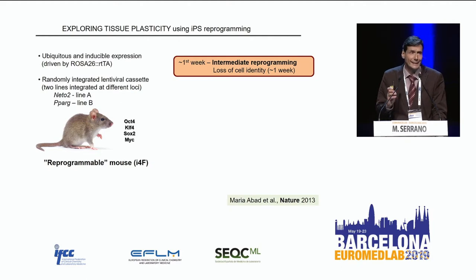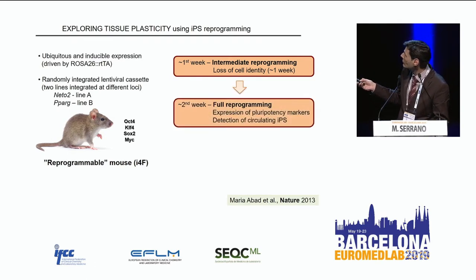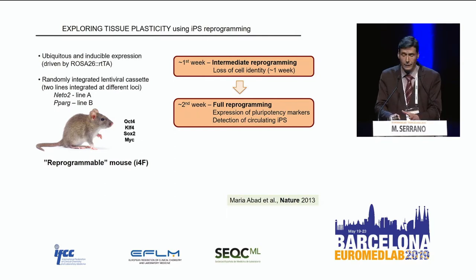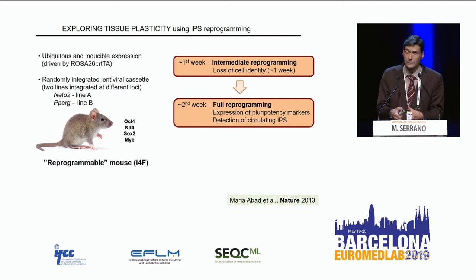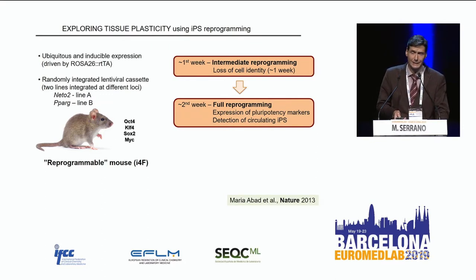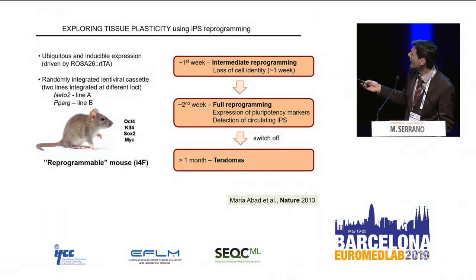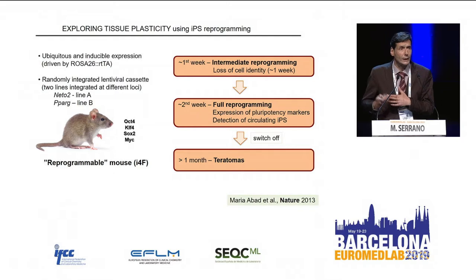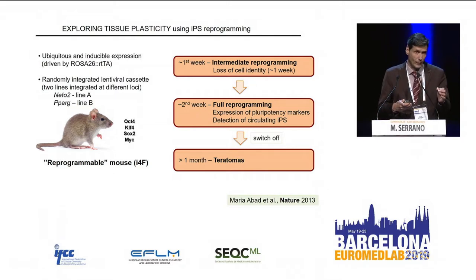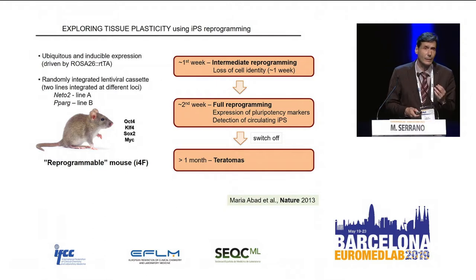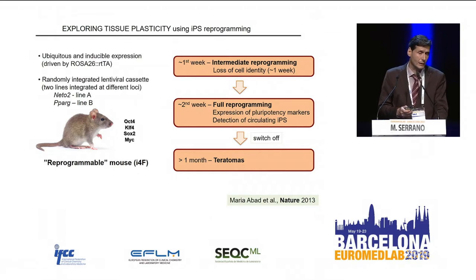We are interested in inducing de-differentiation in adult tissues. If we continue with doxycycline, we obtain full reprogramming — pluripotent stem cells appearing in the adult mouse. At this point, we have to stop giving doxycycline because otherwise the mice die: the intestine becomes very dysplastic and cannot absorb nutrients. If we stop doxycycline, something remarkable happens: much of the de-differentiation goes back to normal. Some reprogrammed cells are able to produce teratomas, which is evidence that we achieved a fully pluripotent state in vivo.